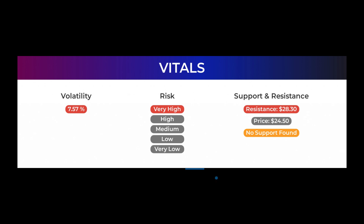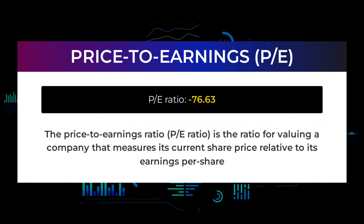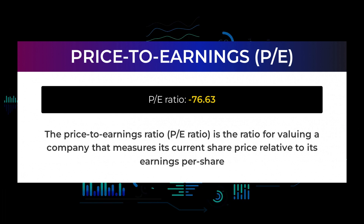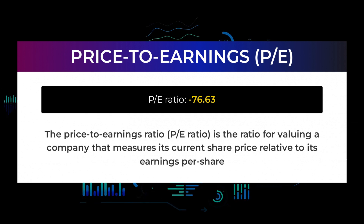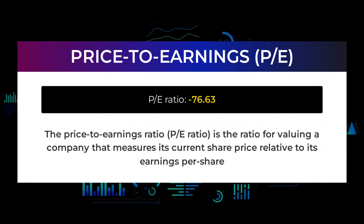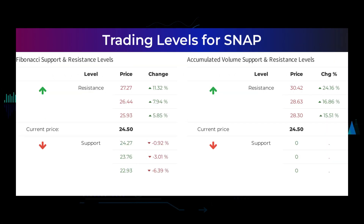The stock has a beta of 2.25, which tells us that Snap is 1.25 times more volatile than the market. Let us have a look at some fundamental data you should be aware of before we discuss possible good trading levels. The price to earnings ratio (P/E ratio) is the ratio for valuing a company that measures its current share price relative to its per-share earnings. Snap currently has a P/E ratio of minus 76.63. A negative high P/E ratio means the company has negative earnings or is losing money. Companies that consistently show a negative P/E ratio are not generating sufficient profit and run the risk of bankruptcy.